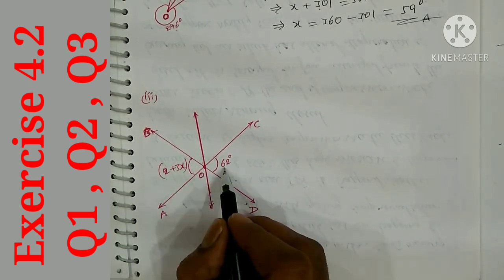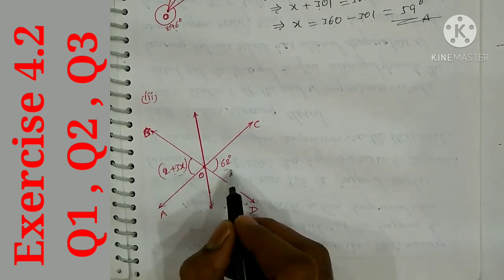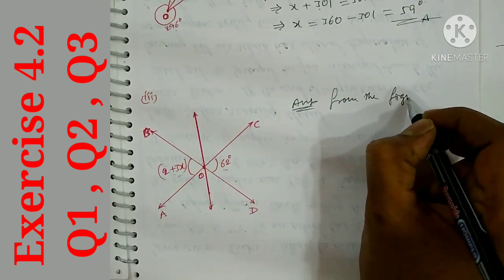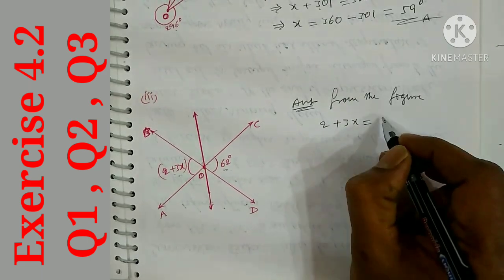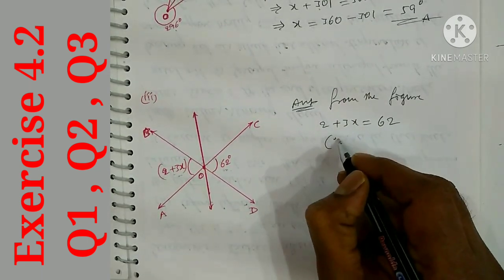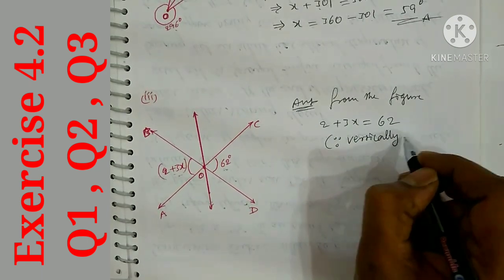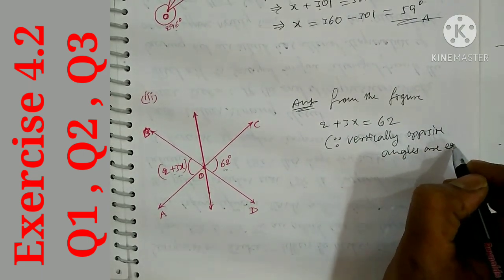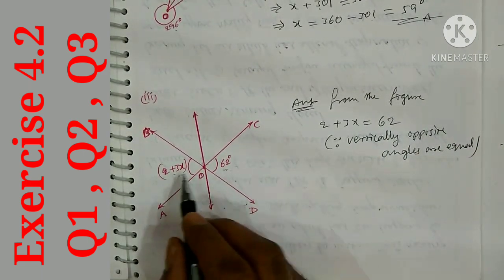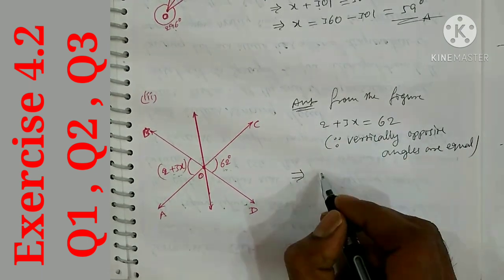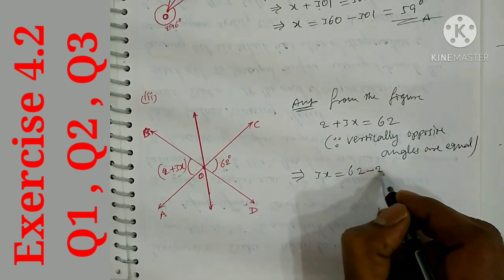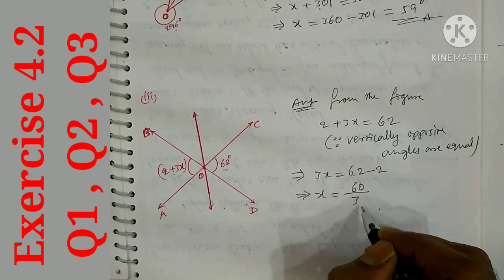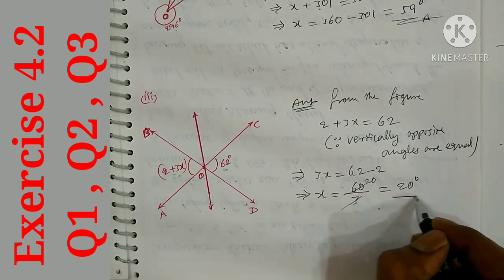Part (c): These two angles are vertically opposite angles, so they are equal. From the figure: 2 + 3x = 62. Taking 2 to the right side: 3x = 62 - 2 = 60, so x = 60 ÷ 3 = 20 degrees.